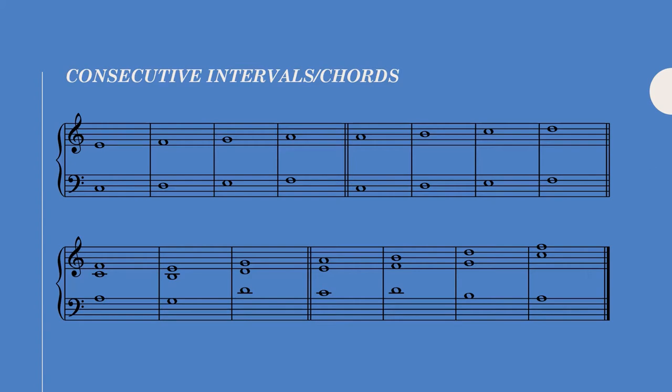Let's dive in. I'm going to skip over the obvious rules that are pretty much universally accepted amongst counterpoint treatises, like forbidding parallel fifths or octaves. Instead, I'll talk about the more subtle rules and exceptions. So let's start with consecutive intervals and chords.